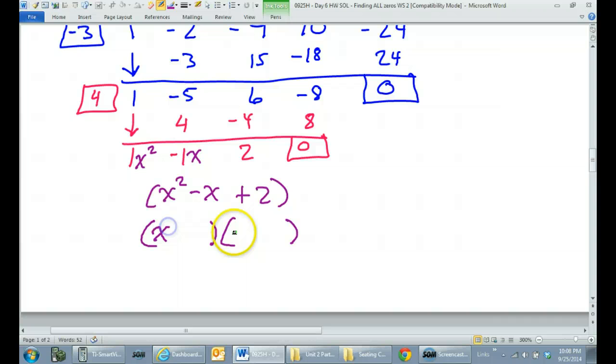x squared would only factor as x times x. 2 can only be 2 times 1. Now inner plus outer must give me the middle. Inner I have 2x, outer I have 1x. I'm trying to get a middle of negative x. Is there a way I can do the signs here so I get negative x out of it? Yes, if I have negative 2x and a positive 1x, that would make negative x. So there's my negative 2 and there is my positive 1. But there's one last thing I have to check.